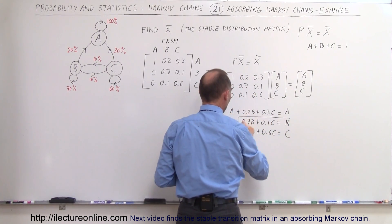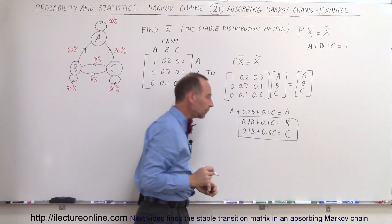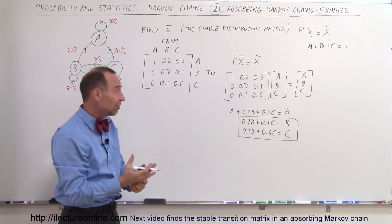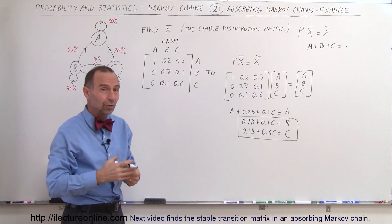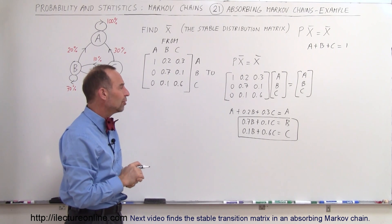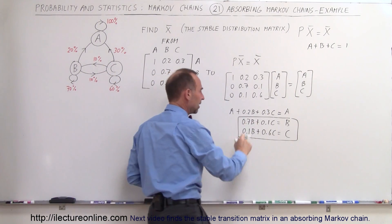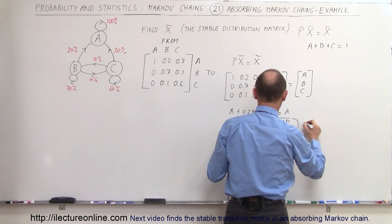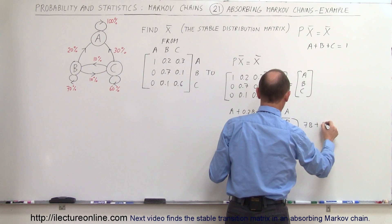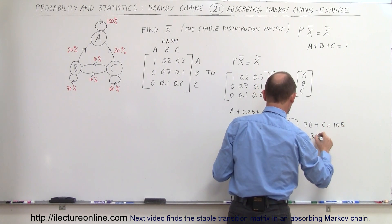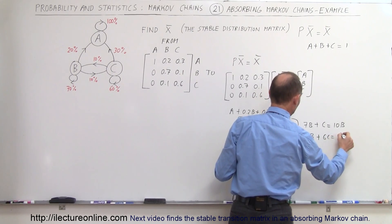Now if I take these two equations, notice that those two equations only have B and C in them. So two equations and two unknowns, I should be able to solve those simultaneously. I'm going to multiply both equations by 10 to make it easier to get rid of the decimal. So when I do that I get 7B plus C equals 10B, and then here I get B plus 6C equals C.